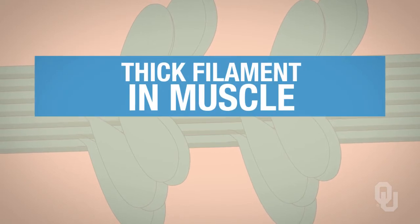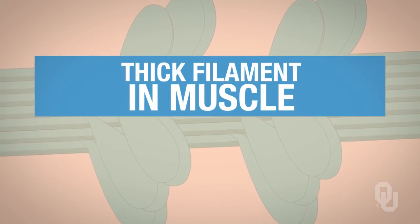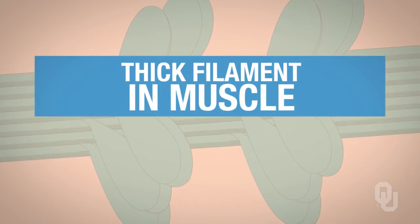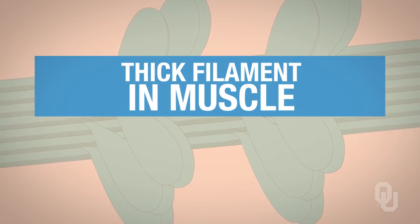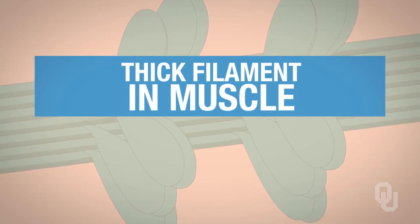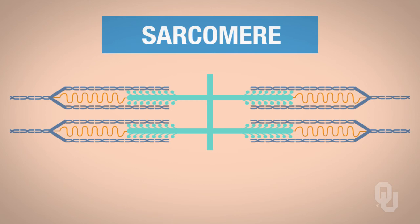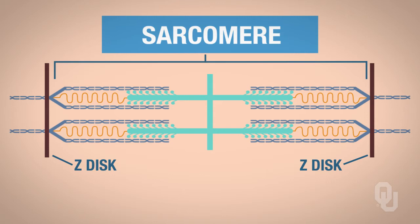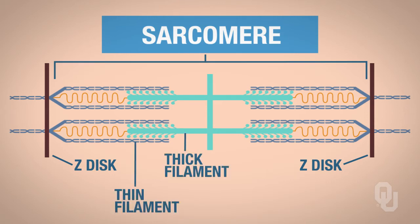This video lecture will cover the thick filament, which is a myofilament structure in muscle. To begin, it's important to realize that when you look at a sarcomere, a sarcomere extends from a Z-disc to a Z-disc — this is one sarcomere. That sarcomere consists of both thin and thick filaments.